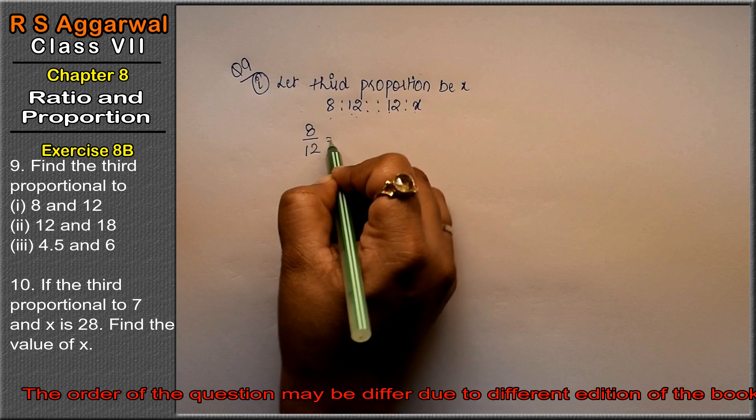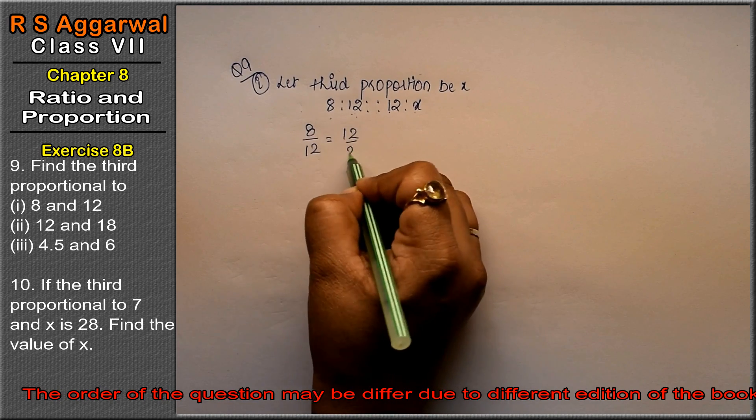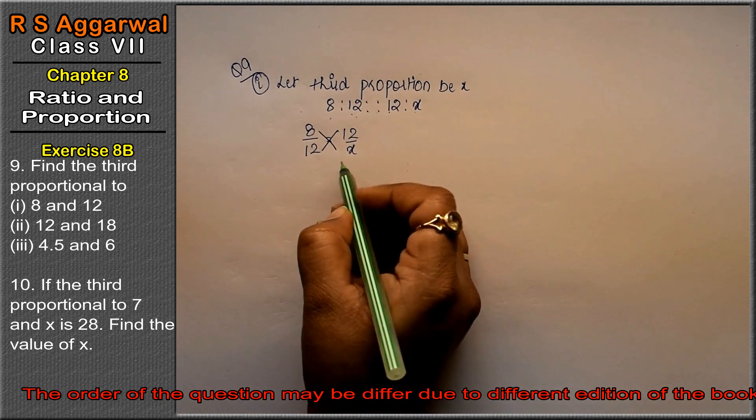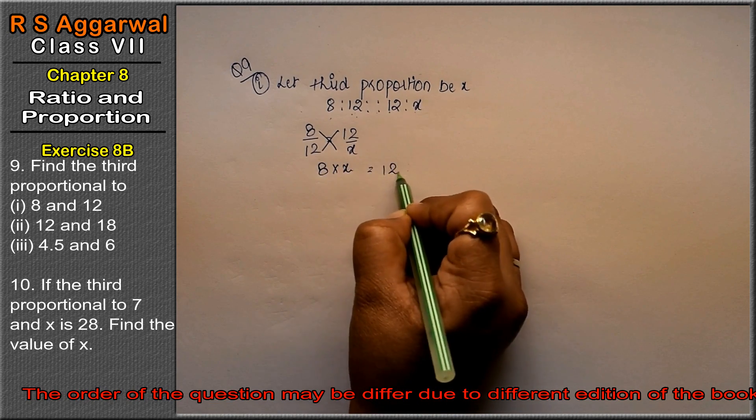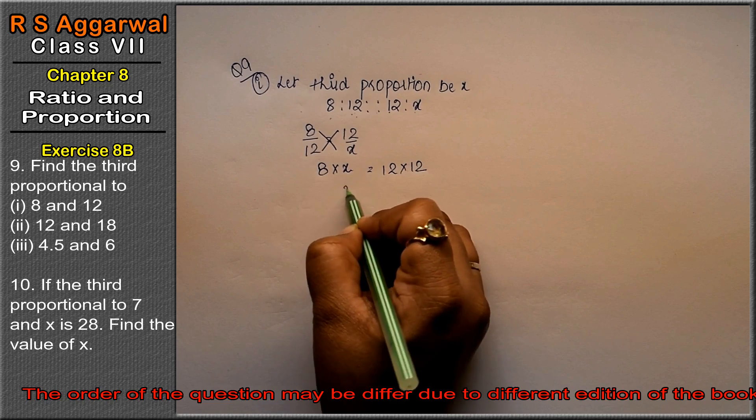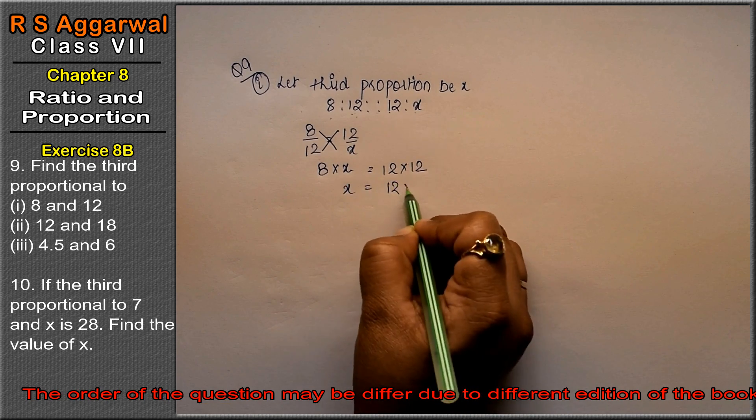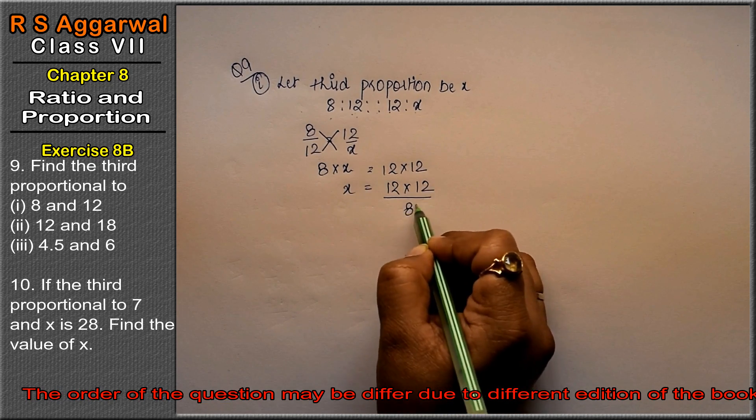8 upon 12 equals to 12 upon x. Now we know that this is cross multiply. So 8 multiplied by x equals 12 multiplied by 12. How much is the value of x? 12 into 12 upon 8. So how much is this?